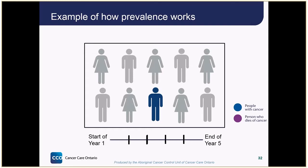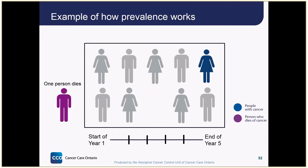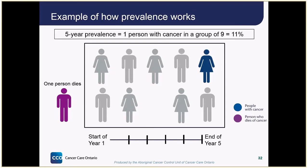During the second year, another person was diagnosed with cancer. One of the people with cancer died not long after being diagnosed, and there were no new cases of cancer diagnosed in the fourth or fifth years. When we make our prevalence measurement at the end of five years, there are nine people living, one of whom has cancer.